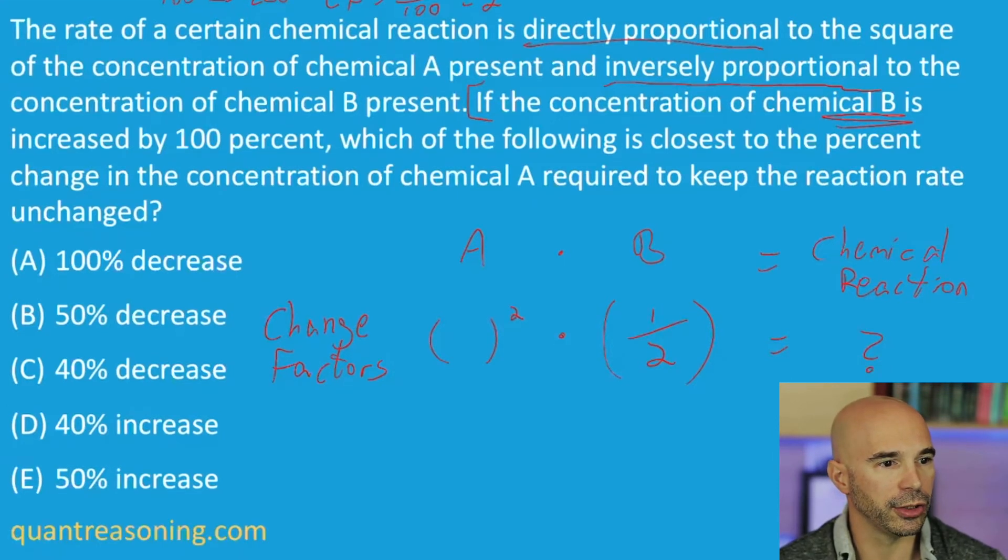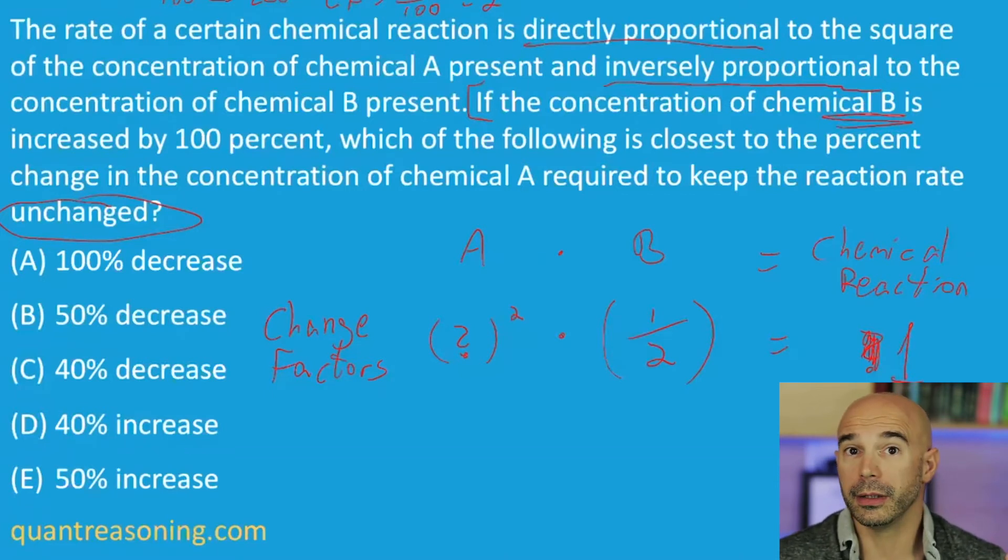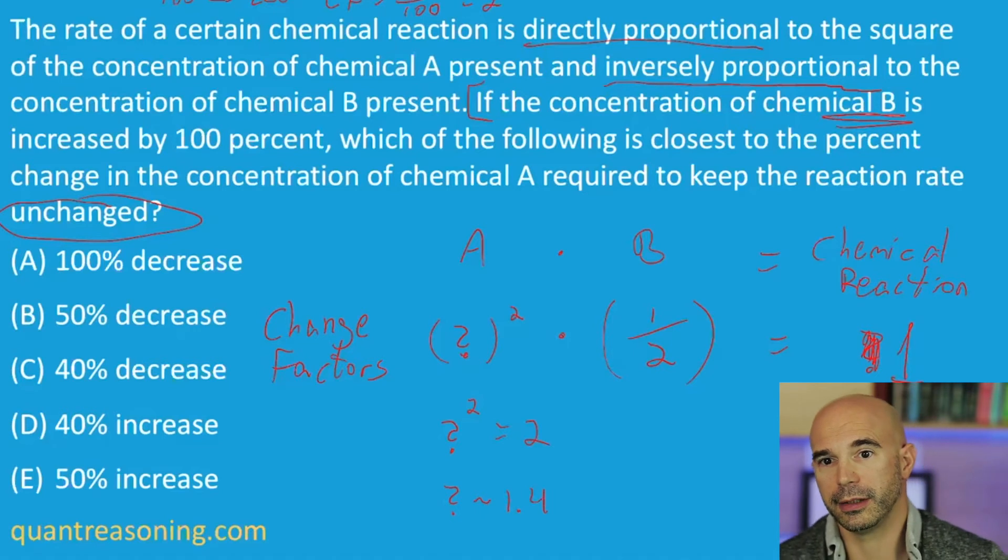I'm going to keep reading. Which of the following is closest to the percent change in the concentration of chemical A required to keep the reaction rate unchanged? So actually, my question mark shouldn't go there. My question mark should go here. This is what they're asking for. And what will go on the right-hand side under chemical reaction? That's right, remaining unchanged, meaning a change factor of one, multiplying by one. So we are trying to figure out what squared times half equals one. If you like, you can multiply both sides of the equation by a factor of two. So you'd get question mark squared equals two. And then if you've memorized the square root of two, you'll know that the question mark is approximately 1.4. One of the tricks people use to memorize this is Valentine's Day, 214. The square root of two is approximately 1.4.